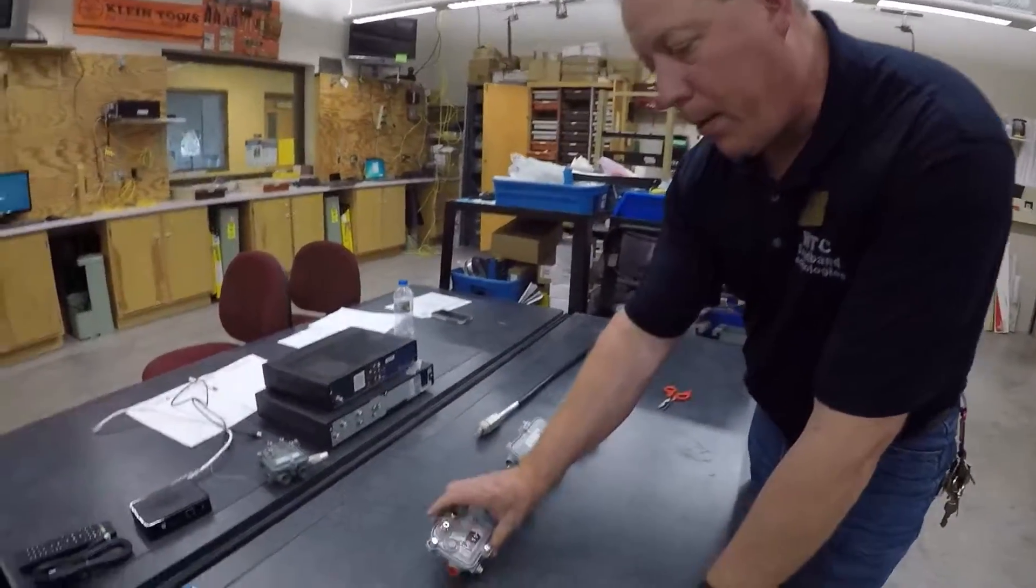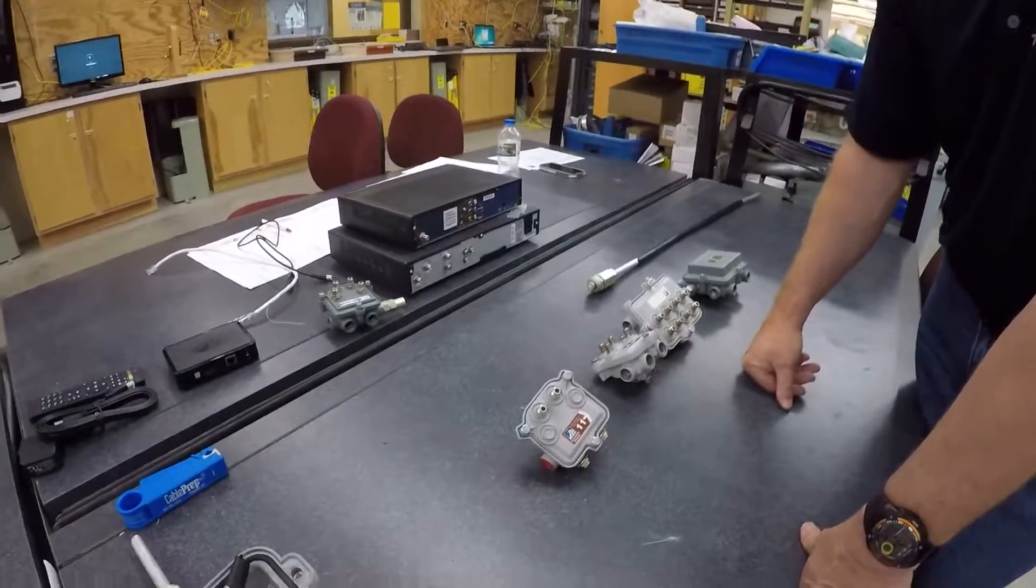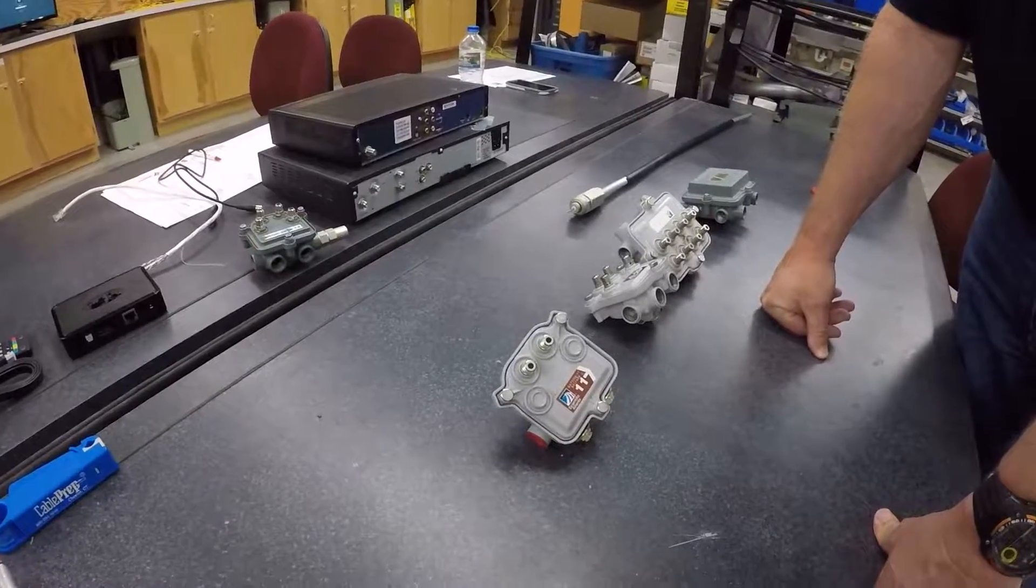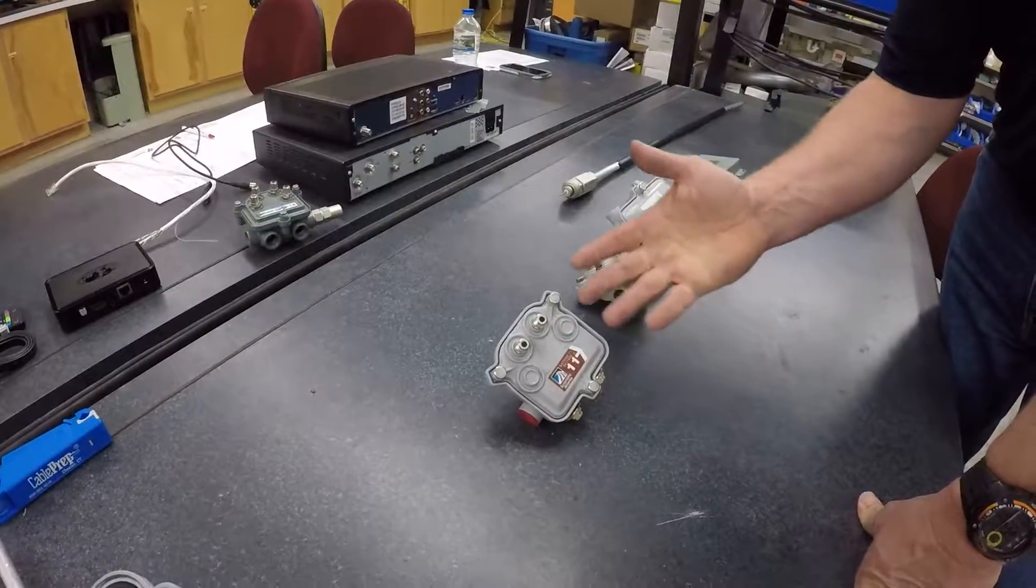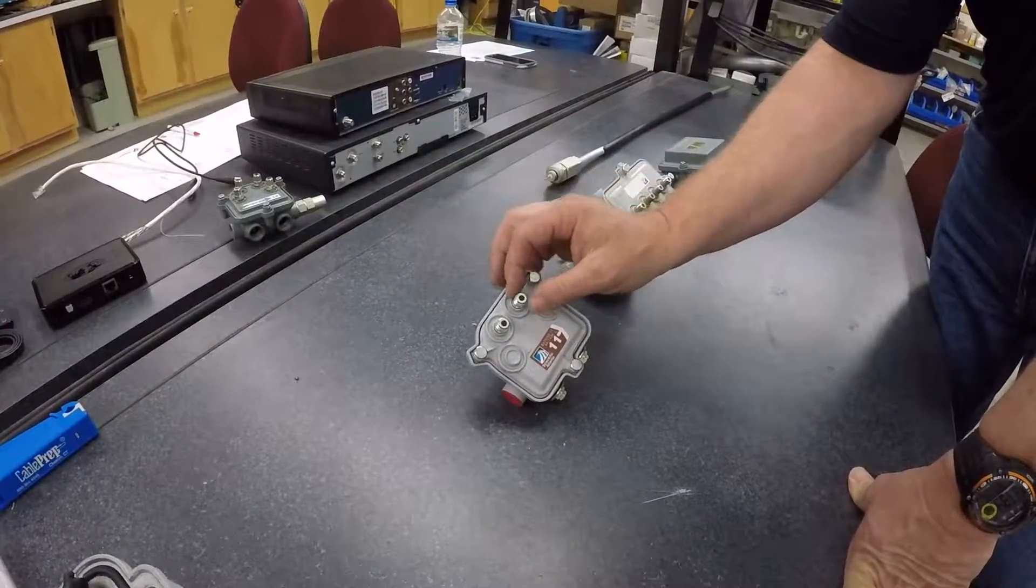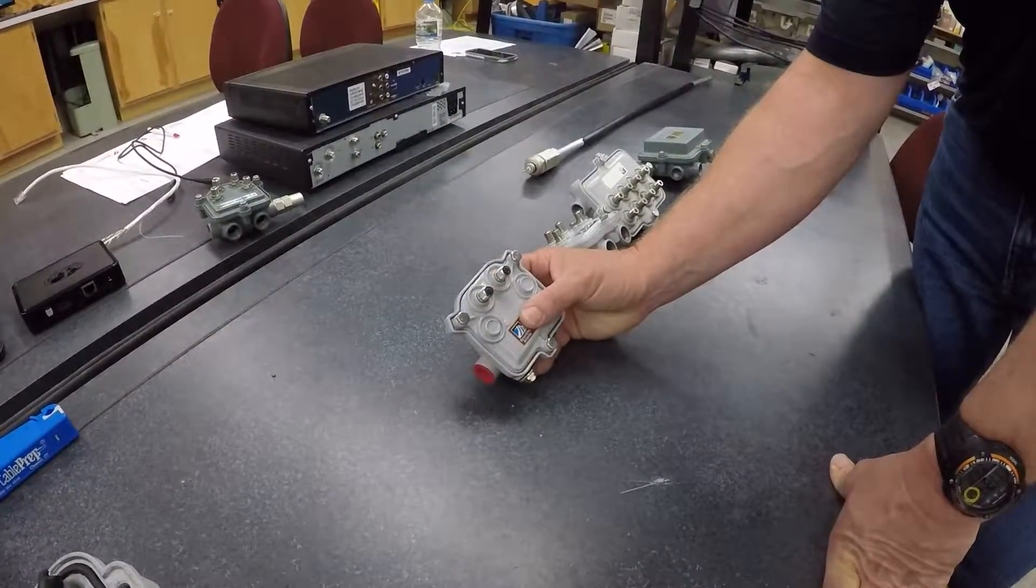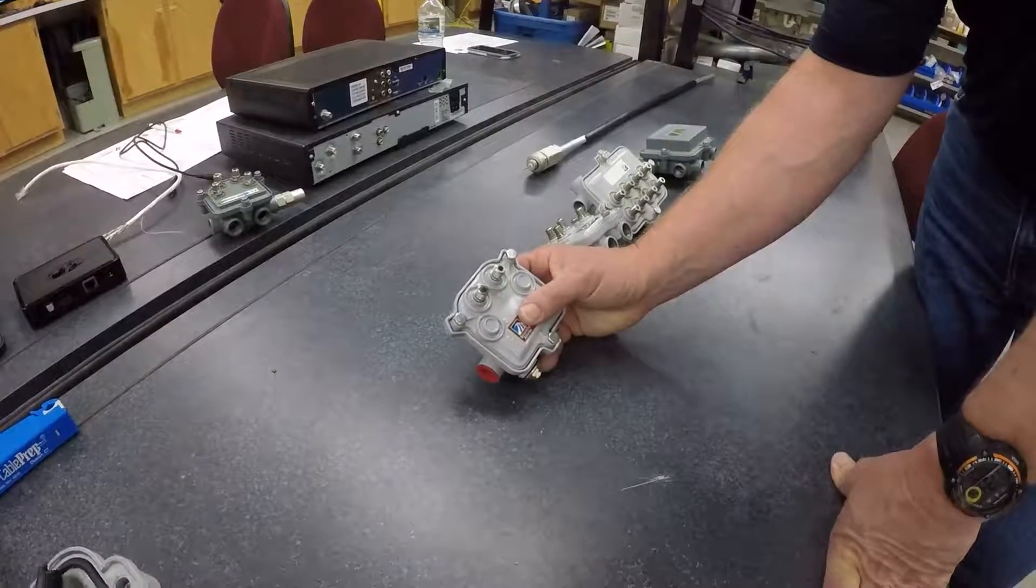The first component we're going to talk about is a tap. This is a two port tap. And in the cable TV industry, taps mean that's where your drop cable comes off of, that is connected then to your NIU or NID at your house.